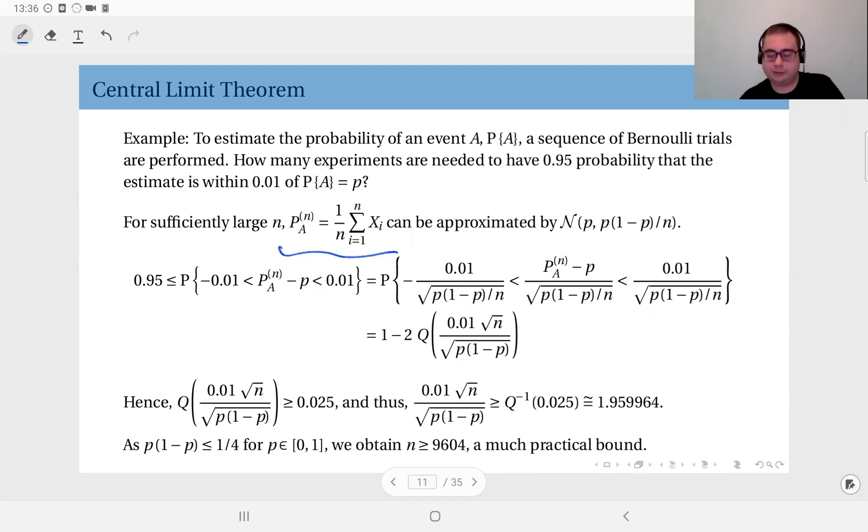And we know that its mean is p, and its variance is p times 1 minus p divided by n.